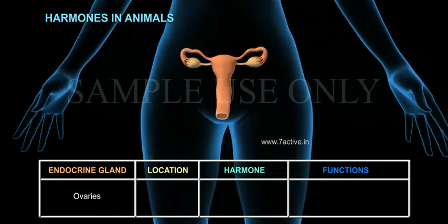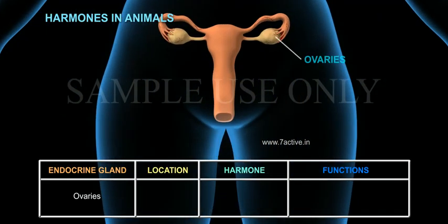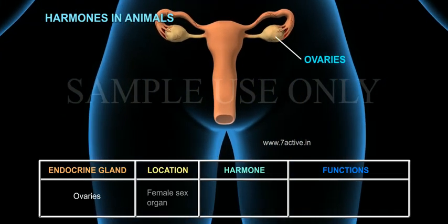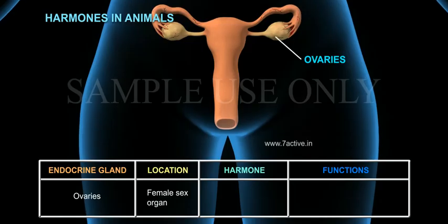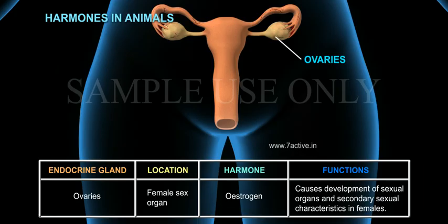The Ovaries are the female sex organ. Their hormone is estrogen, which causes the development of sexual organs and secondary sexual characteristics in females.